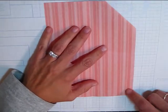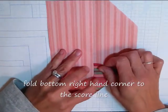This way, and you're going to take this bottom right corner and you're going to fold it up to where it meets that score line. It should go straight here.